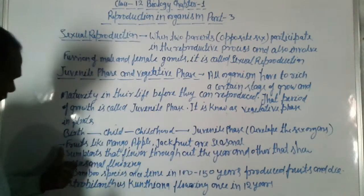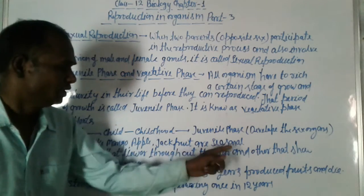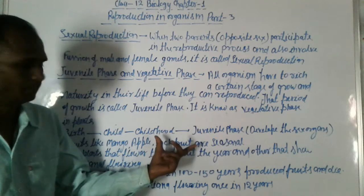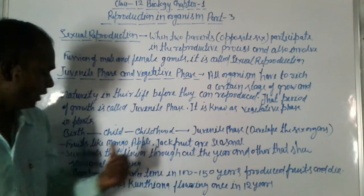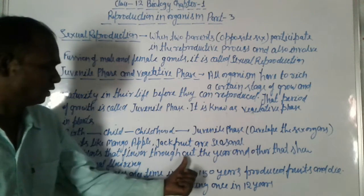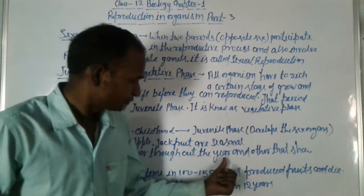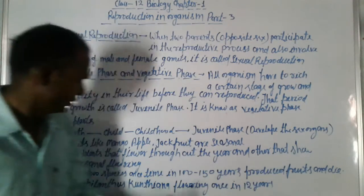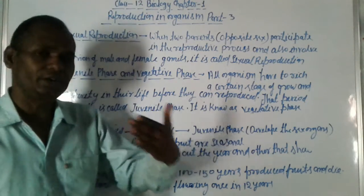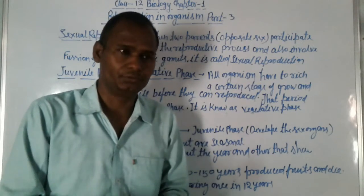Fruits like mango, apple, and jackfruit are seasonal — they flower only in season. Some plants flower year-round, while others have seasonal flowering, which occurs once a year or in a particular season. So there is a difference between plants that flower continuously throughout the year and those that have seasonal flowering occurring once a year or in a specific season.